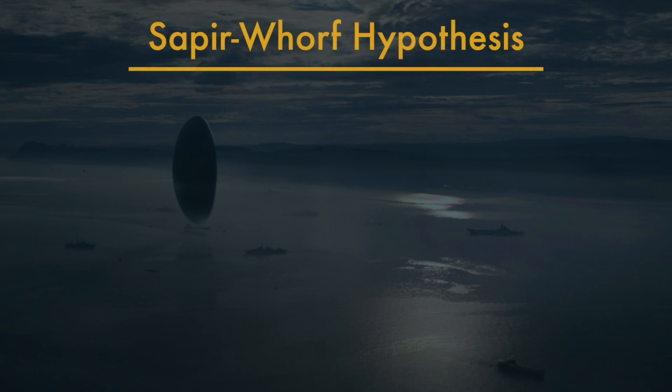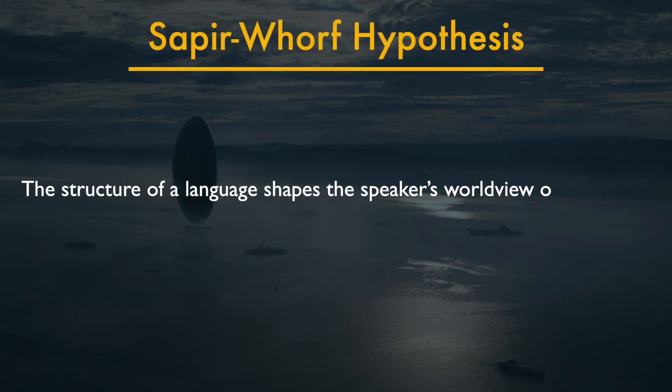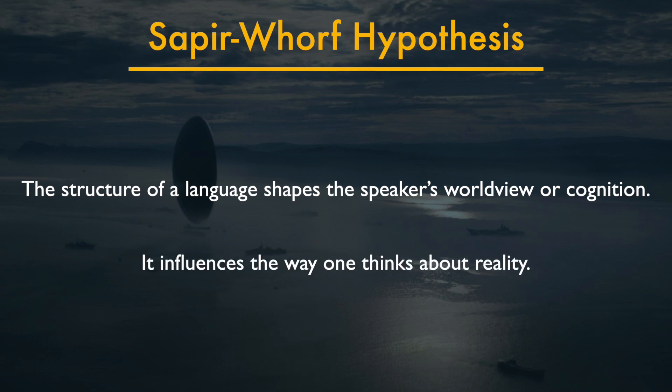The Sapir-Whorf hypothesis proposes that the structure of a language shapes the speaker's worldview or cognition — that is, it influences the way one thinks about reality. When we discuss language, we often factor in the role of culture. Culture and language are intertwined, so to speak. But certain theories, including this one, also bring cognition into the mix, thus making the entire system nebulous. For the sake of simplicity, we are going to look into language and cognition only.